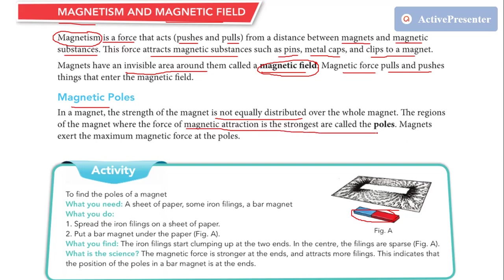So the regions of the magnet where the force of magnetic attraction is the strongest are called poles. Those regions are called poles. The magnets exert the maximum magnetic force at the poles.